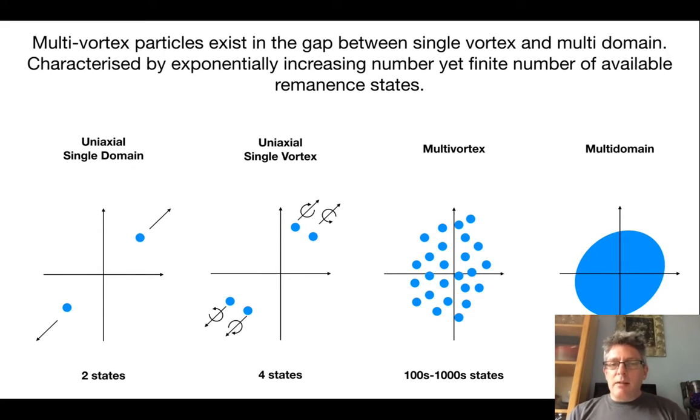In the multi-vortex state, we're talking about particles that have hundreds, maybe even thousands of available remanent states, a finite number separated by energy barriers. That defines a complex energy landscape that we need to define and explore in order to predict the behavior of these states. These are arguably some of the most important remanent carriers in natural samples.